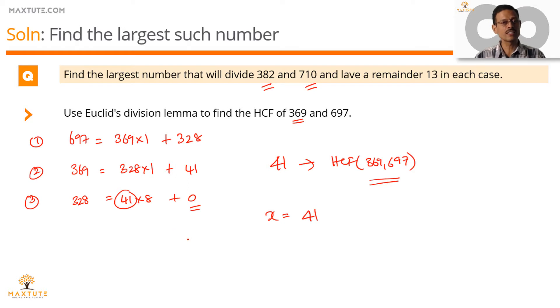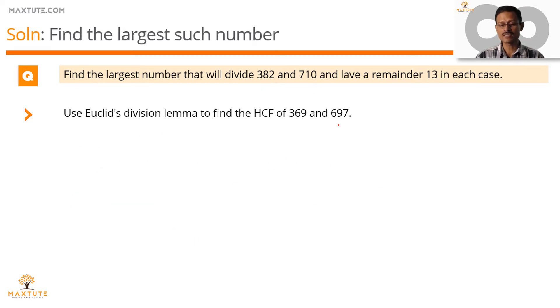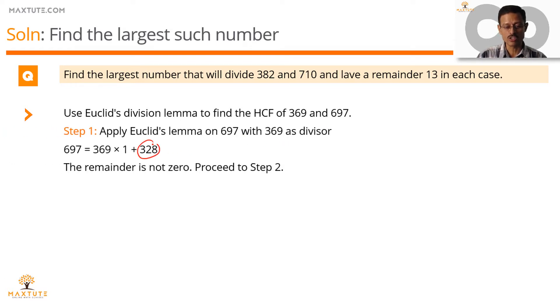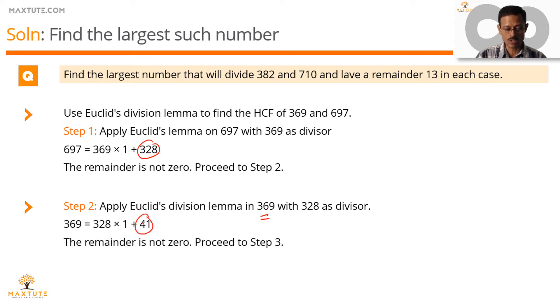Let's quickly summarize Euclid's division lemma in the next slide in printed form. We are applying the lemma on 697 with 369 as the divisor. It will result in a remainder which is not 0, so it's recursively applied. In this step, it's applied on 369 with the remainder of the last step, which is 328 as the divisor. We have a remainder in this case which is also not 0.